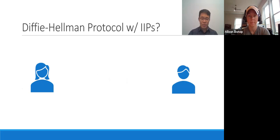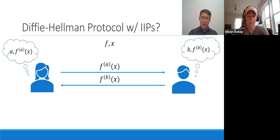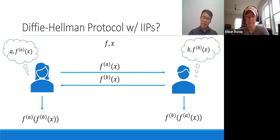Here is a Diffie-Hellman protocol using these polynomials as group actions. For Alice and Bob to reach a common secret, they first agree on a function f and an input x (both public). Alice chooses a secret value a and evaluates f iterated a times on x; Bob similarly uses secret b. They exchange their evaluations. Alice evaluates f another a times on Bob's result, giving f iterated b+a times on x. Bob gets the same result. Both equal f iterated a+b times on x.